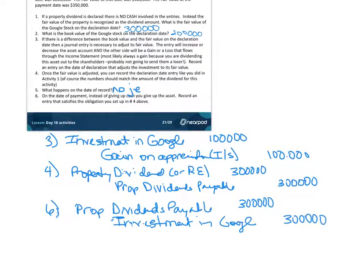We did not do anything with the additional information about the fair value changing to $350,000 at the payment date. We don't worry about that — we just use the value that we set up as the dividend payable. Yes, the shareholders received something of more value, but our obligation was based on the $300,000. That's property dividends. In your project, you'll need entries like this — you can use a short-term or marketable investment account and refer to part of it as an investment in a specific company.